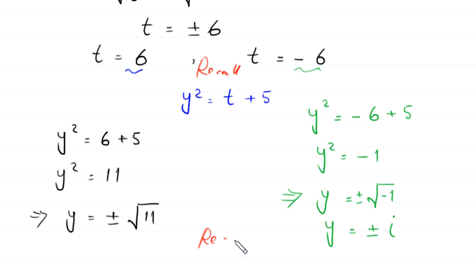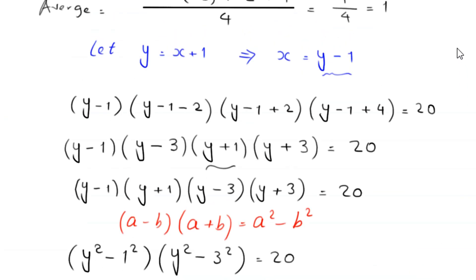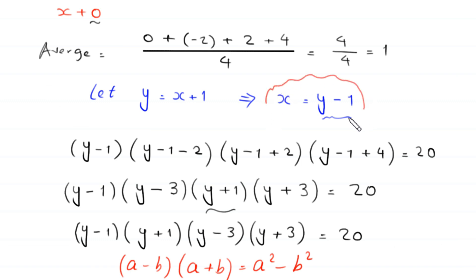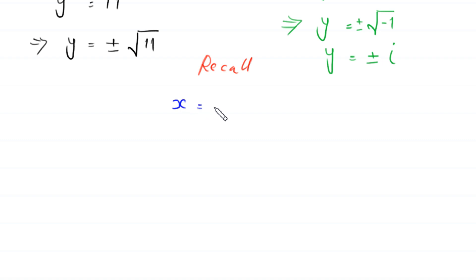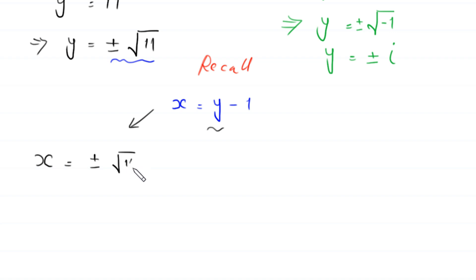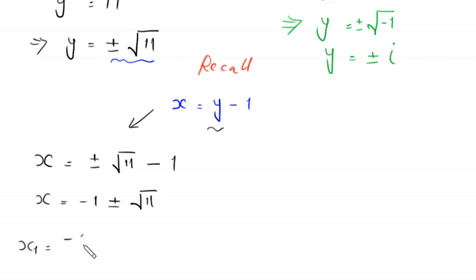To find the values of x, recall that x equals y minus 1. When y equals plus or minus root 11, then x equals plus or minus root 11 minus 1, which can be written as x equals negative 1 plus or minus root 11. This gives us x₁ equals negative 1 plus root 11 and x₂ equals negative 1 minus root 11.